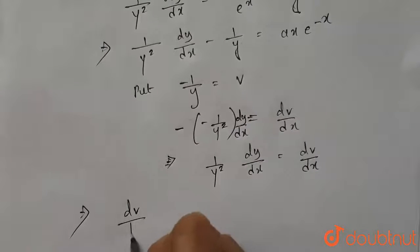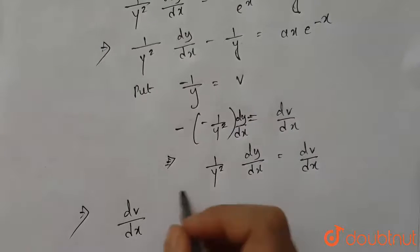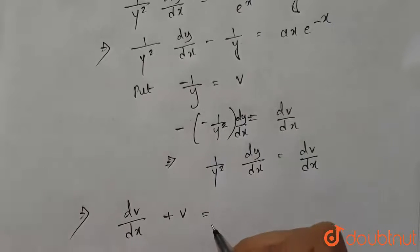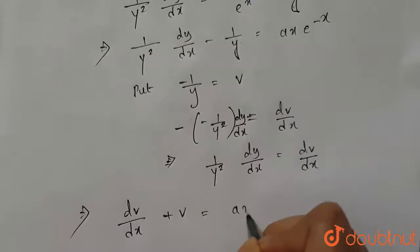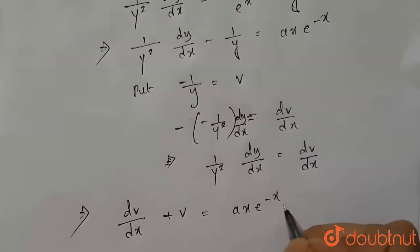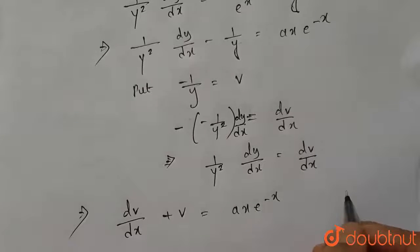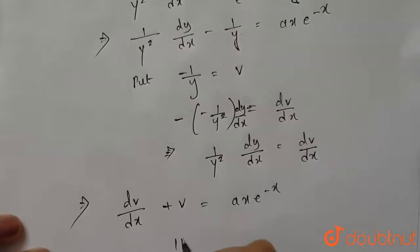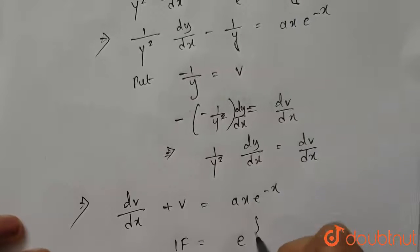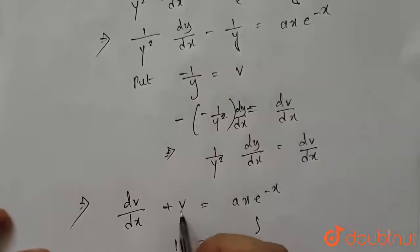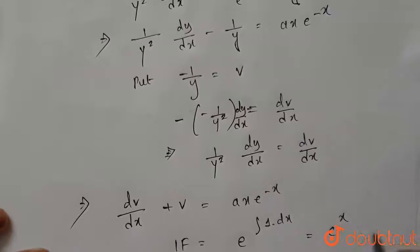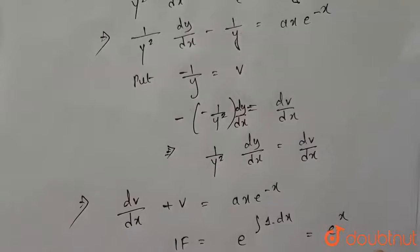Substituting, we get dv/dx − (−1/y) becomes dv/dx + v = ax·e^(−x). This is clearly the form of a linear differential equation. The integrating factor is e^(∫P dx), where P = 1, so the integrating factor is e^x.